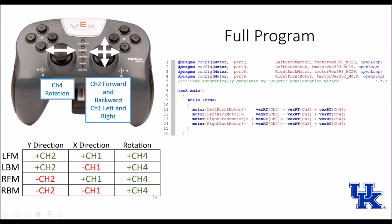To code that, for the left front motor we set it equal to channel 2 value plus channel 1 value plus channel 4 value. For the left back motor, we have channel 2, subtract channel 1, and add channel 4. For the right front, we have the inverse of channel 2, add channel 1, and add channel 4. For the right back motor, it's inverse of channel 2, minus channel 1, and add channel 4.